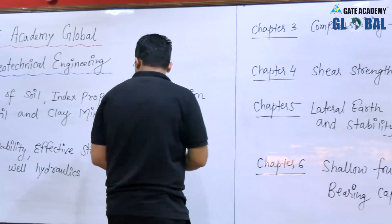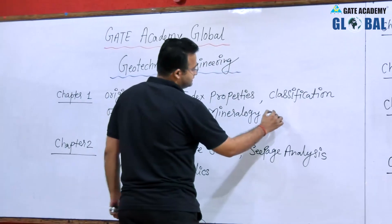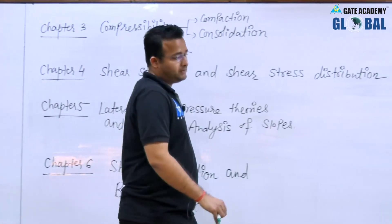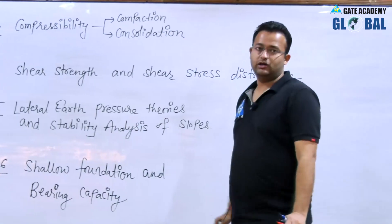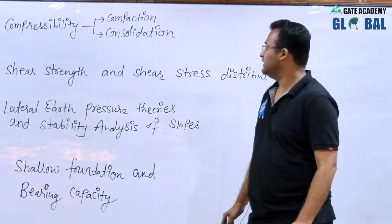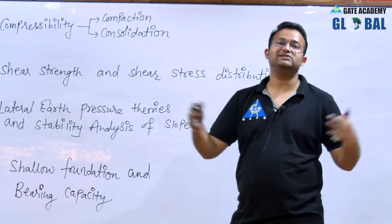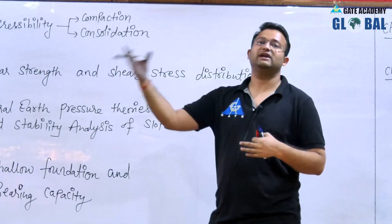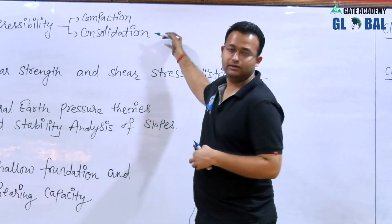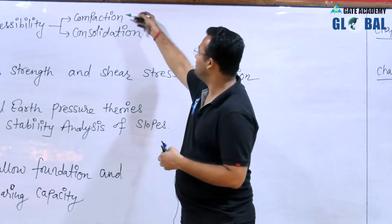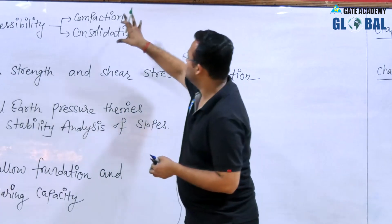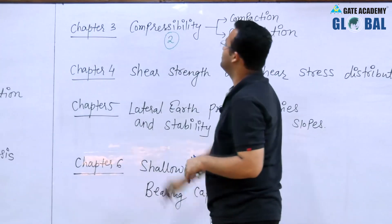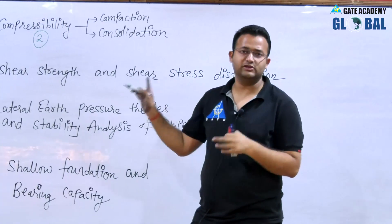The weightage of chapter 1 is 2 marks and chapter 2 is also 2 marks, so together 4 marks. Chapter number 3 covers compressibility, which includes compaction and consolidation. Under compaction, air present in the soil is removed. Under consolidation, excess pore water pressure — the water — is drained out. As these processes occur, settlement of the soil takes place. This chapter also carries 2 marks weightage.